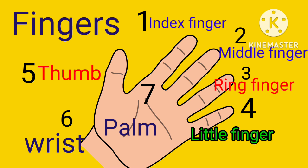Five fingers names. First: Index finger. I-N-D-E-X. Index finger. Middle finger: M-I-D-D-L-E. Middle finger. Ring finger: R-I-N-G. Ring finger. Little finger: L-I-T-T-L-E. Little finger.